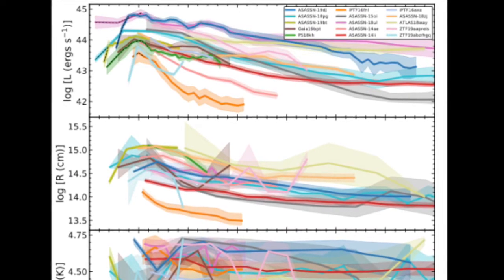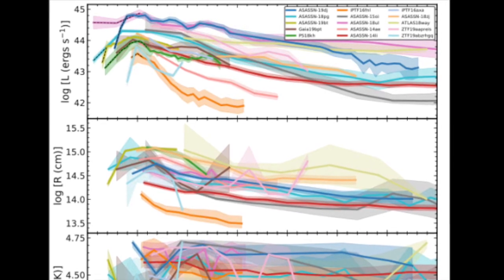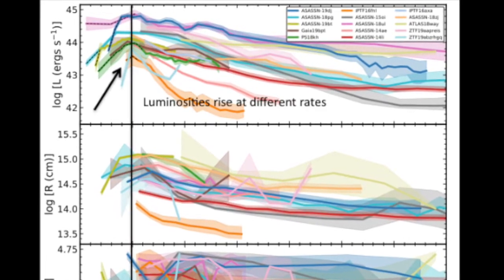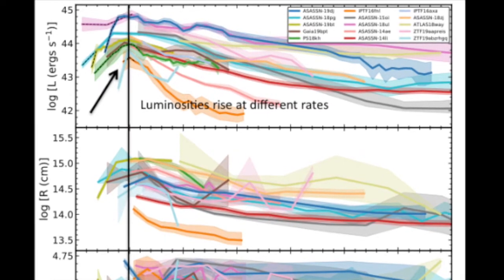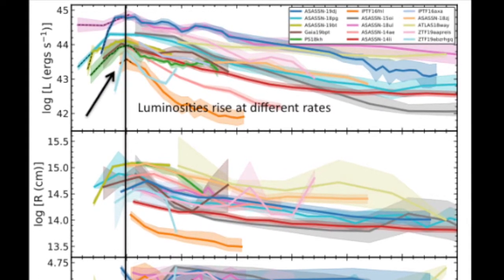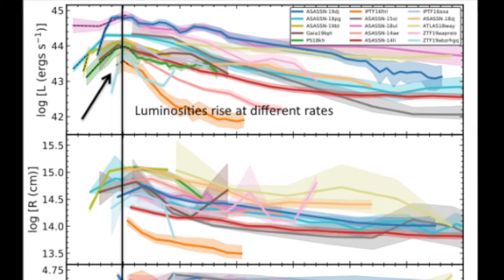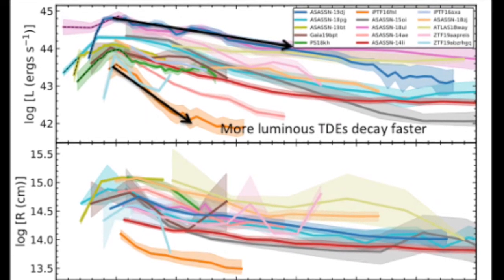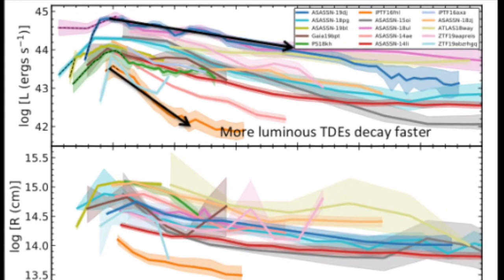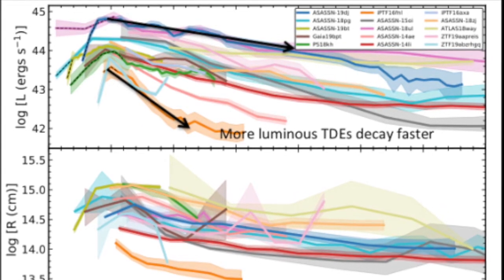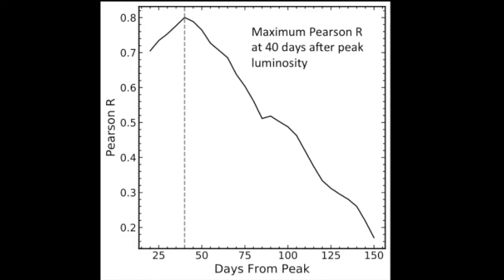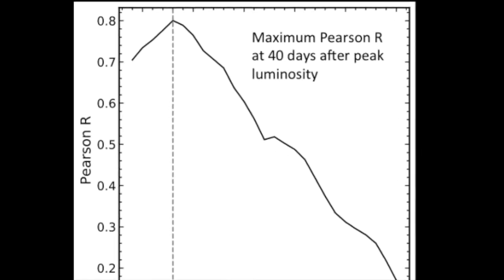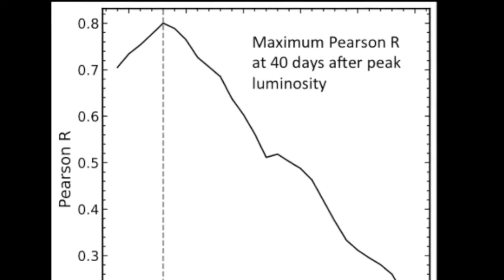Finally, we shift our attention to the bolometric UV optical luminosity shown in the top panel. The luminosities appear to rise at different rates relative to peak, again shown with the black line. Another thing that jumps out is that the more luminous objects appear to decay faster, indicated here with the two arrows. Because of this, we look for a trend between the peak luminosity and the decay rate by examining the Pearson-R correlation coefficient in steps of 5 days.